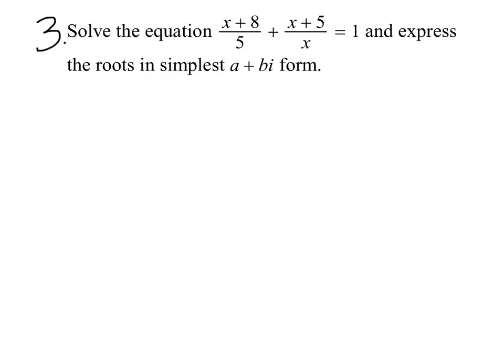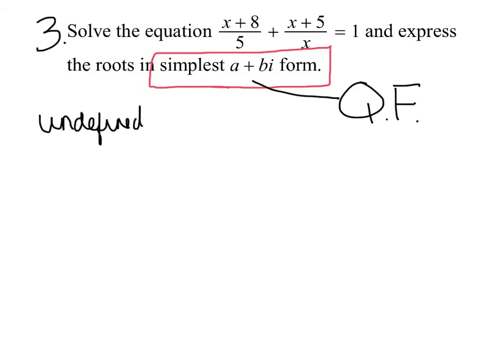Question 3. Solve the equation, X plus 8 over 5 plus X plus 5 over X equals 1, and express the roots in simplest A plus B-I form. Get that equation on your paper and get this simplest A plus B-I form on there. Again, they're not going to be as blunt to say, use quadratic formula. They're going to give you these hints. And A plus B-I form is another hint that you need quadratic formula. So, let's talk about two things first. What makes this fraction undefined? Check out those denominators. I only have one variable. So, I just can say X cannot equal 0 here. And secondly, what is the least common denominator? Remember, you need one of all the denominators. Well, I have the monomial 5 and the monomial X. So, 5X is my least common denominator.